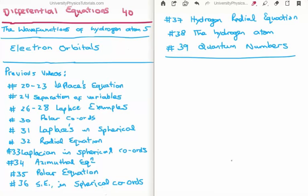Specifically I'm going to discuss the electron orbitals. There are a lot of videos previous to this which are relevant and I've listed them there from 20 through to 39. The most important of which is video 38 where I discuss the hydrogen atom and I introduce quantum numbers, the electron orbitals and so on.